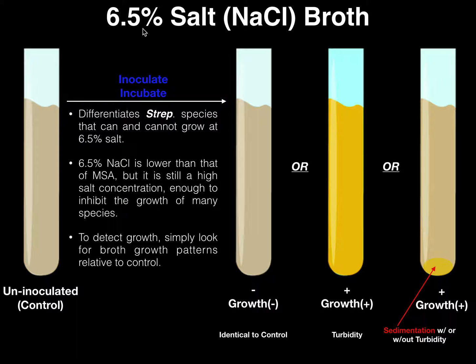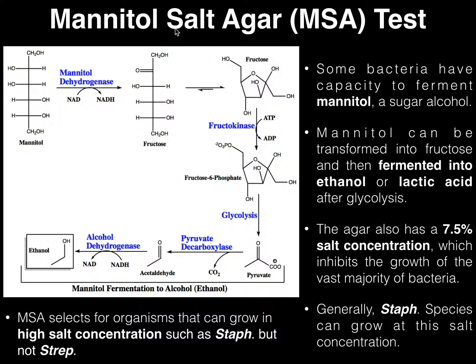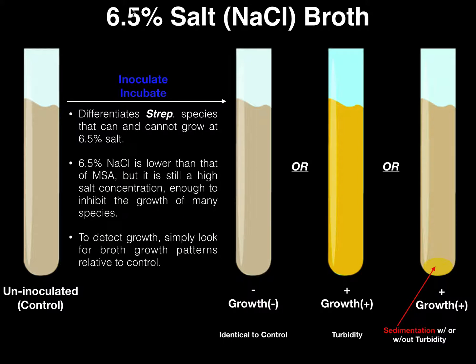If you think back to the previous video when we talked about MSA, Mannitol Salt Agar had a 7.5% salt concentration, which is very, very high and is high enough to kill most bacteria — they cannot survive at that concentration. 6.5% is obviously one percent lower, but it's actually still pretty high.